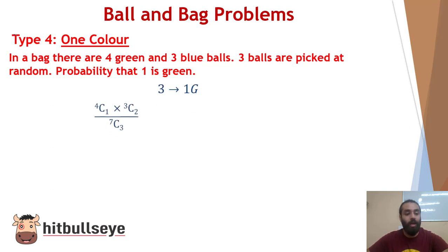Now 4C1 denotes that we have to pick that one ball is green. So there will be remaining two balls that will definitely be blue. So 4C1 because there were four in total the green balls and three the blue balls were there upon 7C3. Solving this equation,